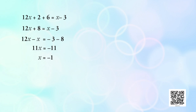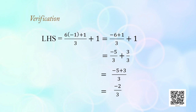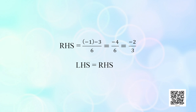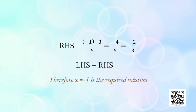Let us check by putting x = −1 on the left hand side. LHS = [6(−1) + 1]/3 + 1 = (−6 + 1)/3 + 1 = −5/3 + 3/3 = −2/3. Both the left hand side and right hand side give the same answer −2/3 for x = −1. Therefore x = −1 is the required solution.